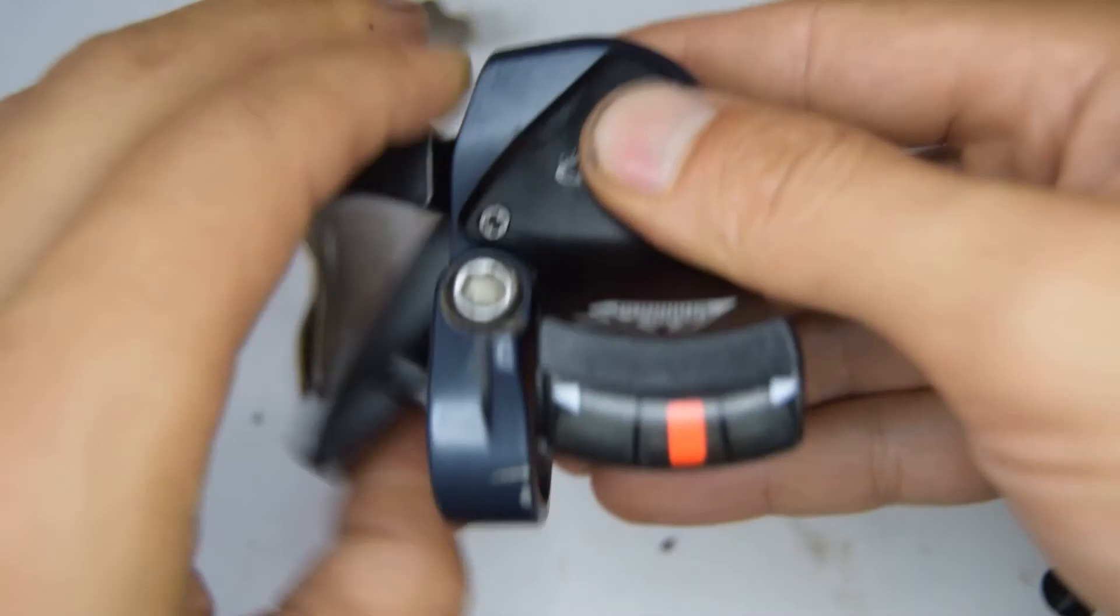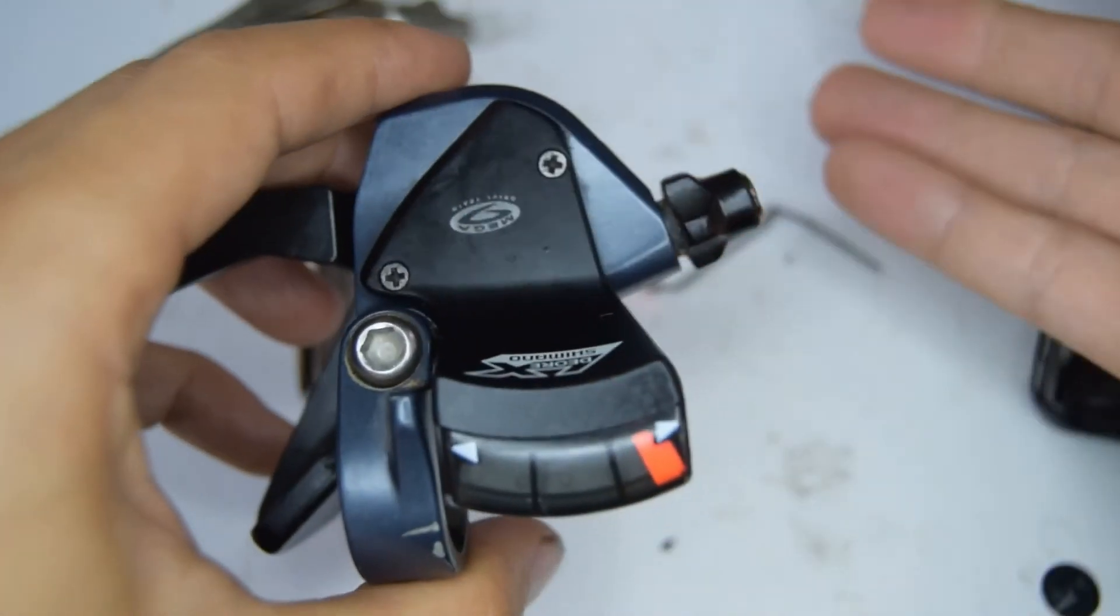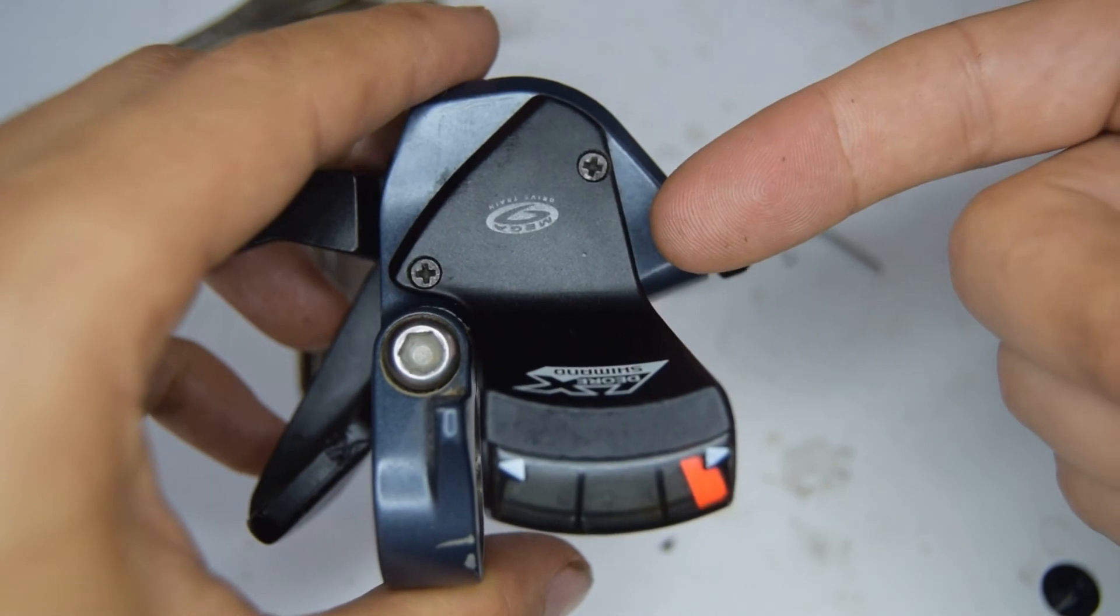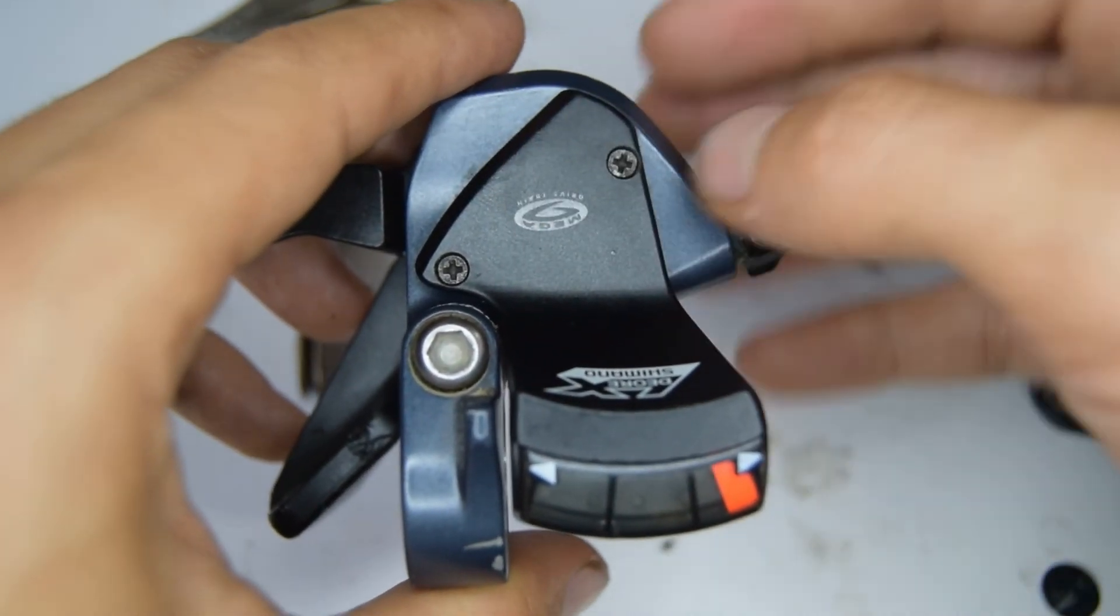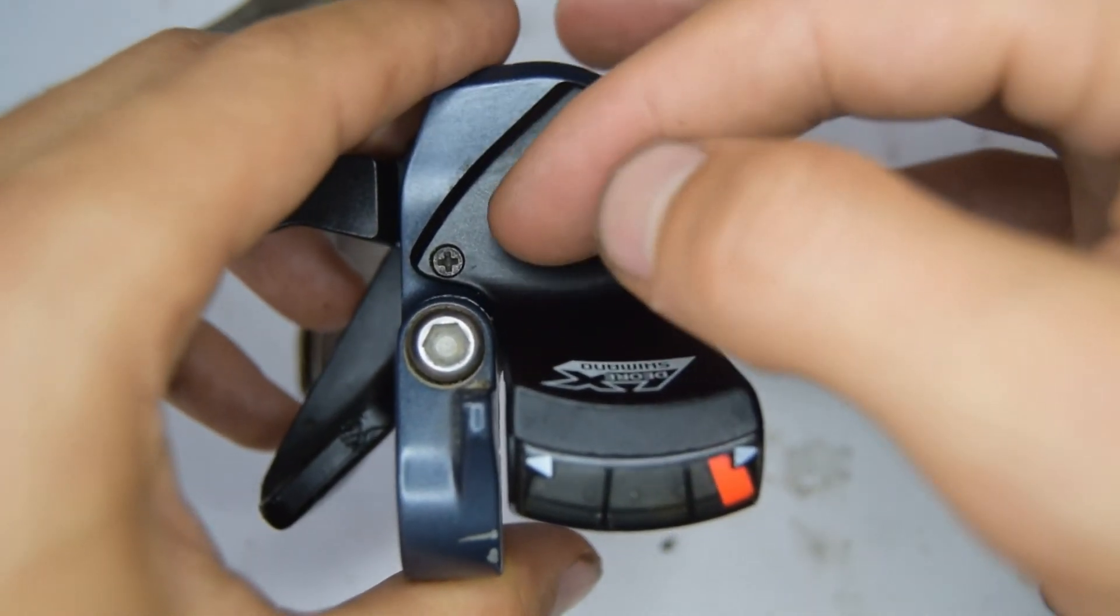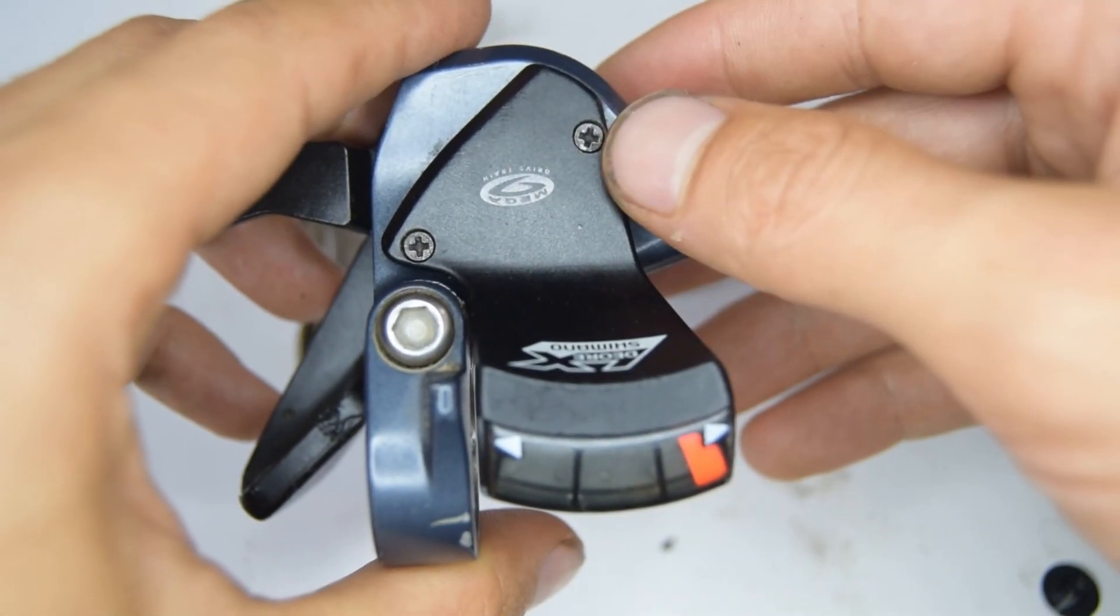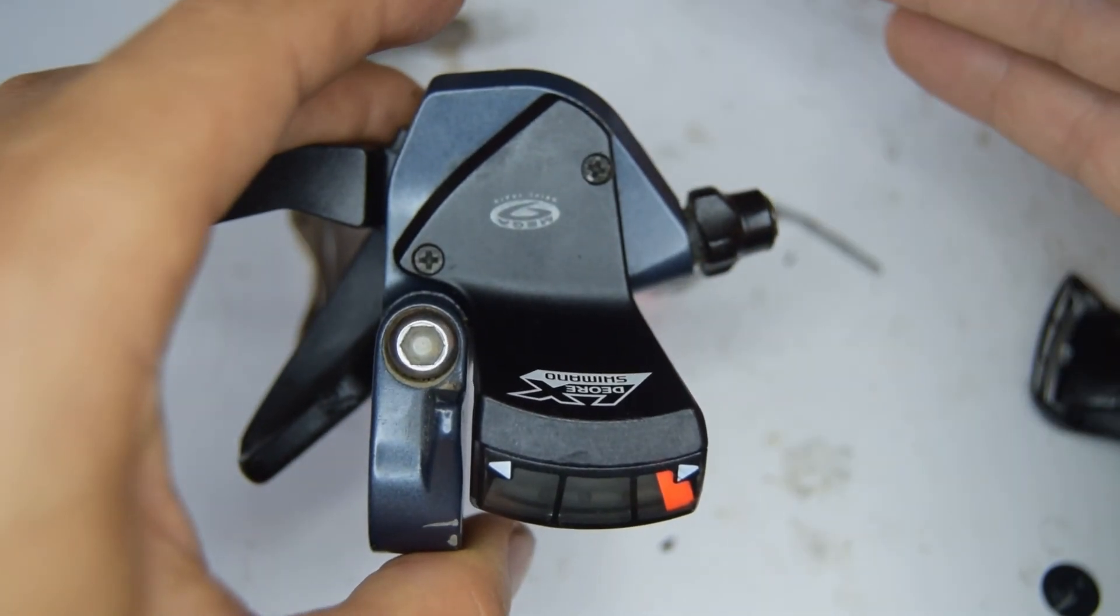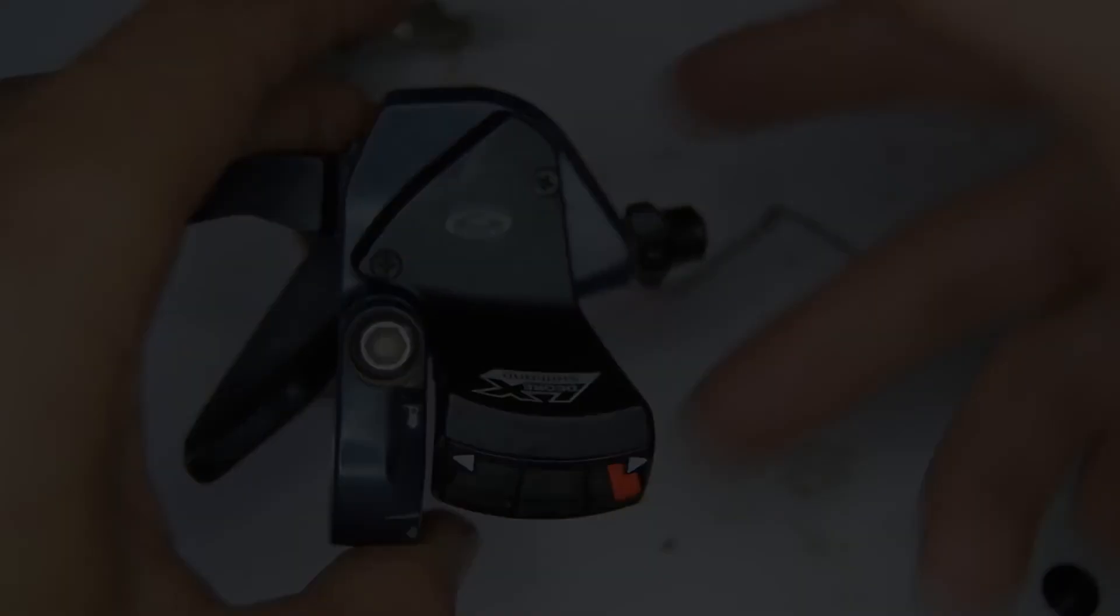Yeah. Okay. All in working order. I hope this helped you repair your LX shifter. I will post up a link below once I do part two. So the right side or the nine speed side. I hope this helped you though. And until next time, peace out.